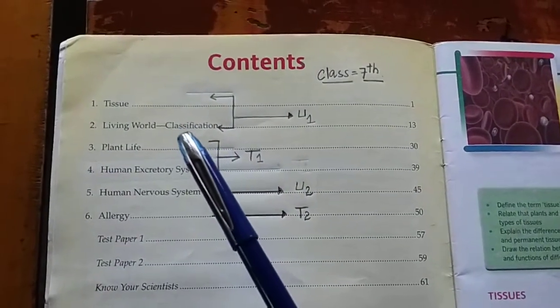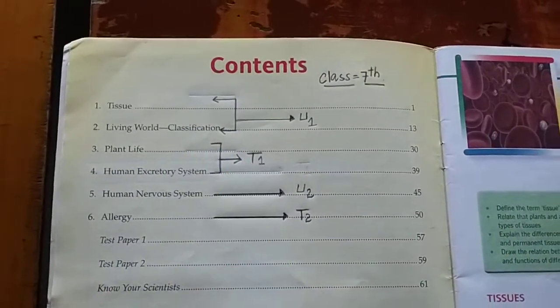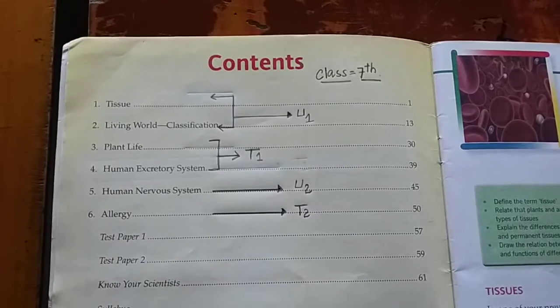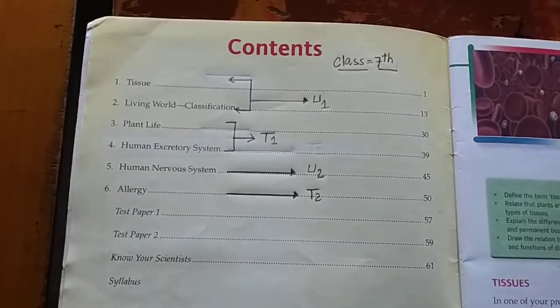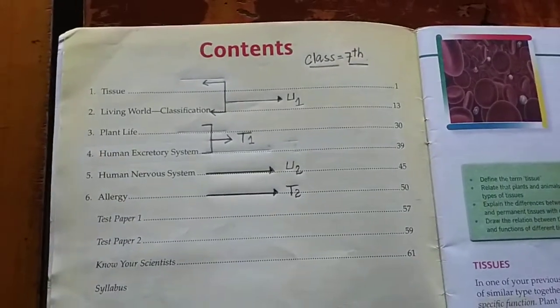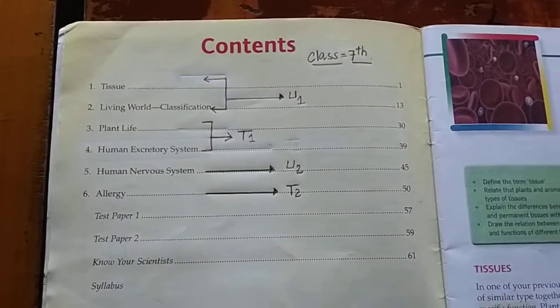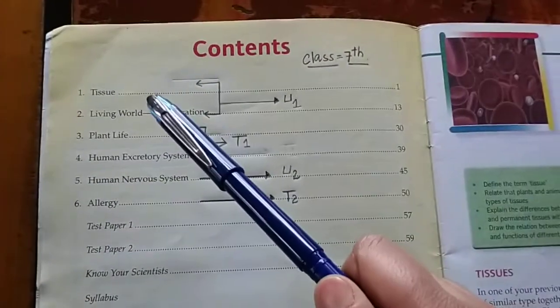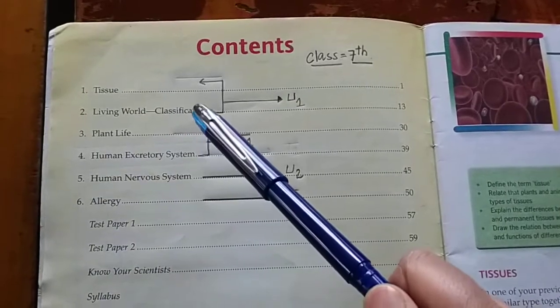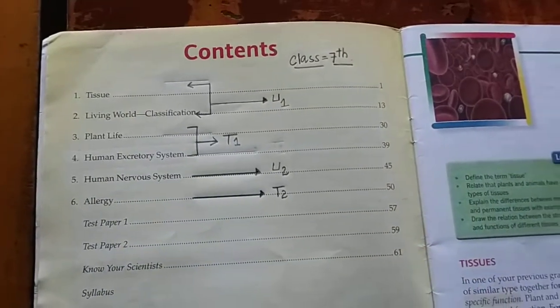Now moving towards the second chapter, Living World Classification. As the name suggests, here we have to focus on classification. When we classify living organisms into groups or categories, this makes their study simpler and easier. In this very chapter, we will be dealing with Robert Whittaker's system of classification.